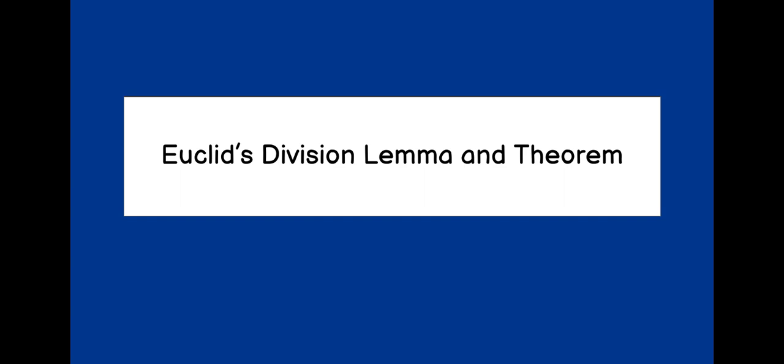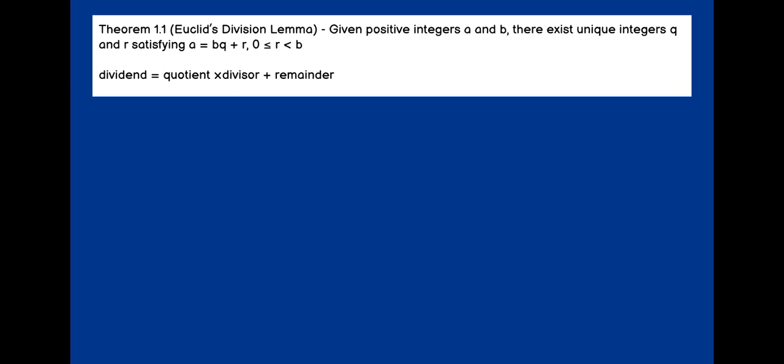Coming to Euclid's division lemma and algorithm. Theorem 1 is given that, given positive integers A and B, there exists unique integers Q and R, satisfying that A equals BQ plus R. R is remainder, B is the divisor, Q is the quotient and A is the dividend. They have also given a condition that the remainder should be either equal to or greater than 0 and the divisor should be greater than the remainder.